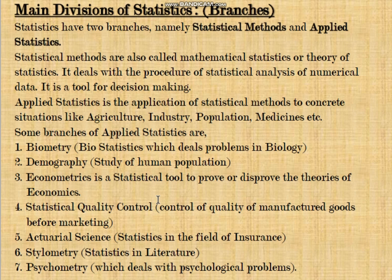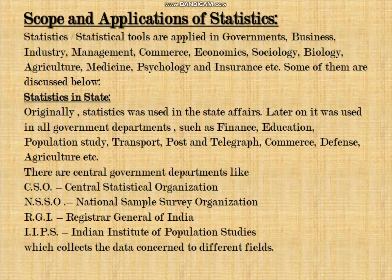The last branch is psychometry, which deals with psychological problems. Psychology studies the mind of patients rather than their physical body, so there are many assumptions and qualitative assertions. We apply statistical tools and techniques to understand and prove or disprove certain theories. These are some examples of applied statistics — branches where statistics is applied.